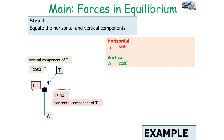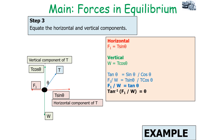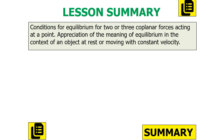From these equations we could find F1 or W if we had values, but we want to find theta. Since we have sin theta and cos theta, we use tan theta equals sin theta over cos theta. Dividing F1 by W gives T sin theta over T cos theta — the T's cancel — leaving tan theta equals F1 over W. Therefore, theta equals tan⁻¹(F1 / W).